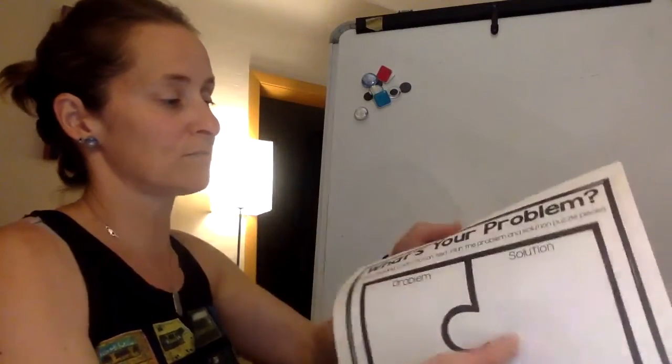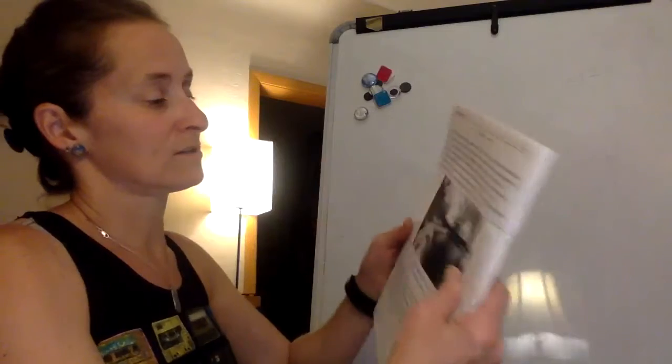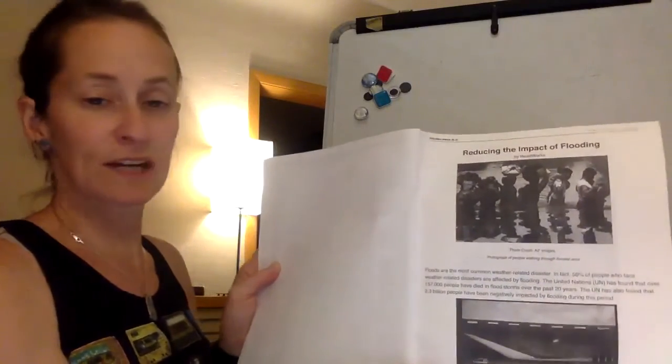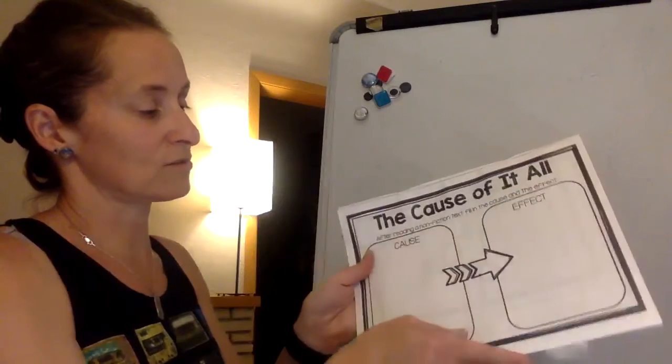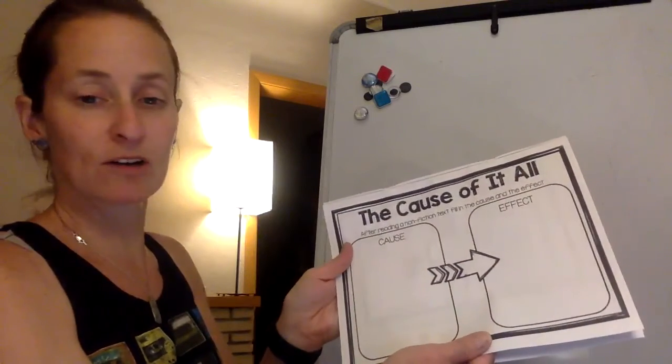Okay, so you're going to be able to do both of these with the same text. So you've got reducing the impact of flooding. Go ahead and read that. And you've got your two charts here to show me what you've learned from the article.